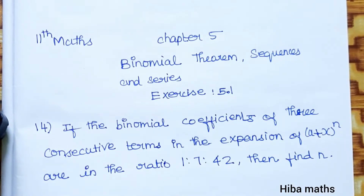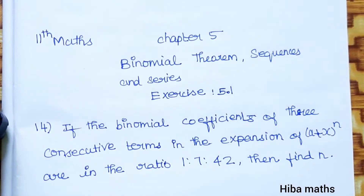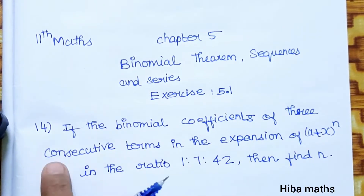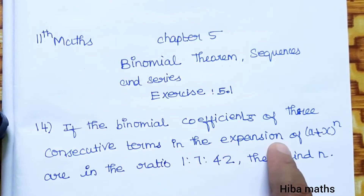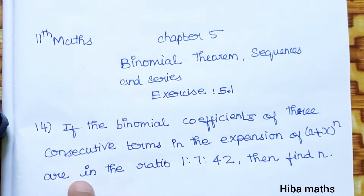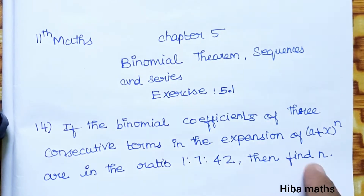Hello students, welcome to Heba Max 11th standard, Chapter 5: Binomial Theorem, Sequences and Series. This is question 14 from Exercise 5.1. If the binomial coefficients of three consecutive terms in the expansion of (a + x)^n are in the ratio 1 : 27 : 42, then find n.